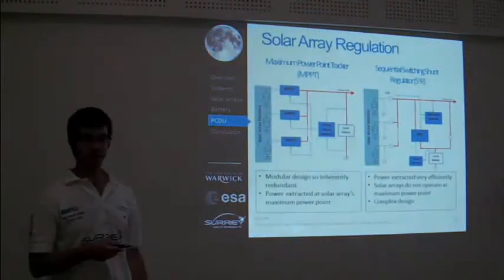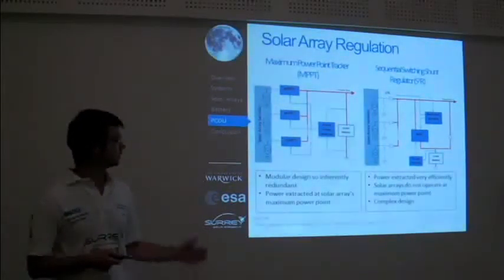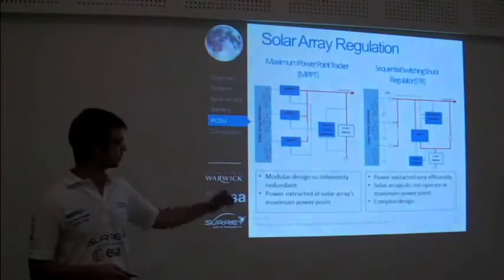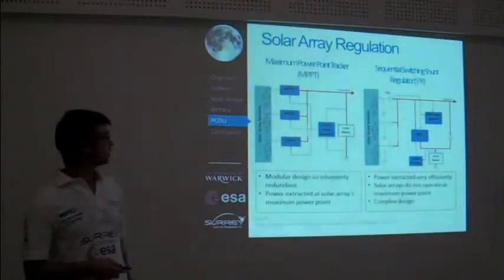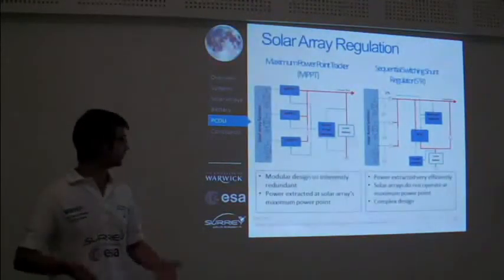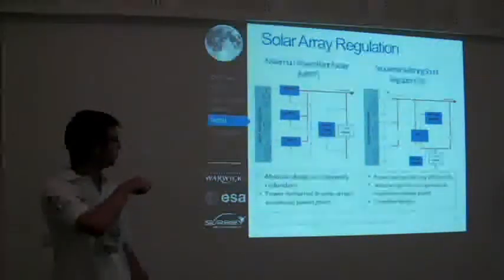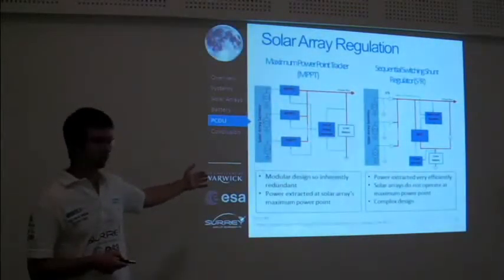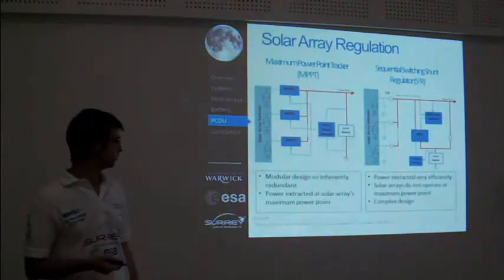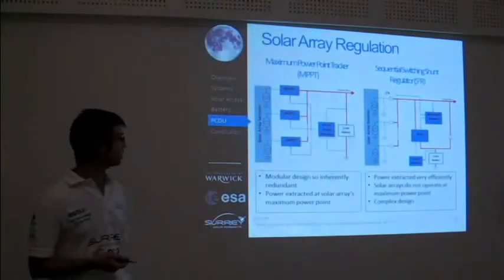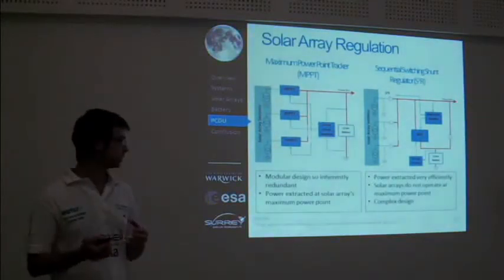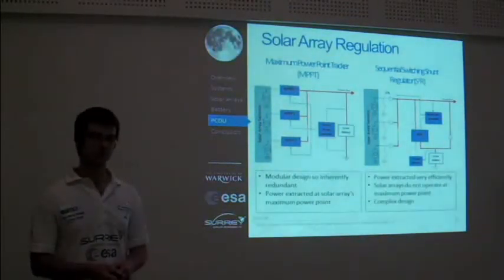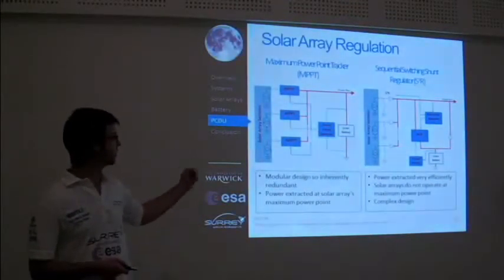Shown here are the simplified block diagrams for both types of solar array regulation. The sequential switching shunt regulator uses a fixed bus voltage maintained using the battery charge regulator, the S3R, and the S3R shunting sections, all controlled by the main error amplifier. MPPT, on the other hand, directly connects the power bus to the battery, meaning the voltage can change over time, with DC-to-DC converters controlled to maintain the solar array voltage near the maximum power point. MPPT is a highly modular design, very resistant to failures, and extracts power at the maximum power point, while S3R is very efficient but complex to make redundant. Since reliability is a key issue for ESMO, we decided MPPT would be the more suitable option.